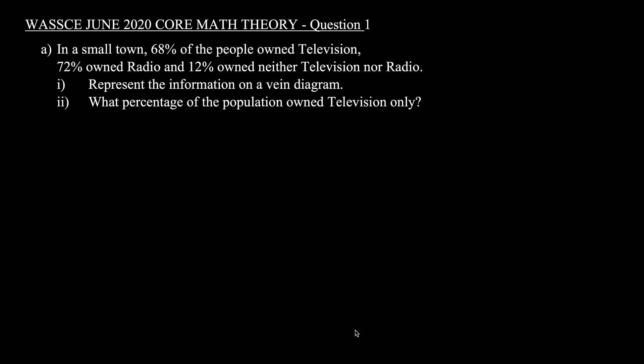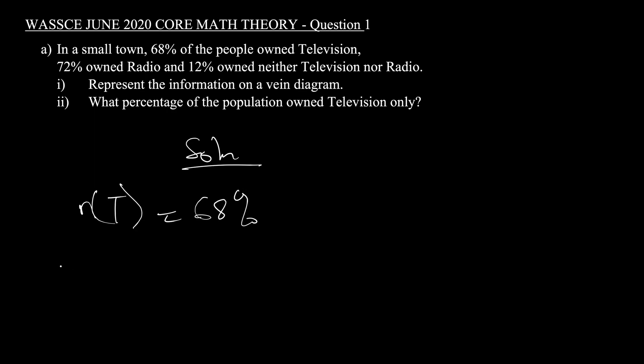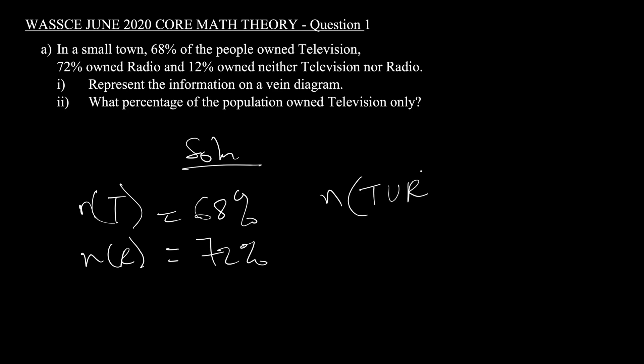In a small town, 68% of the people own television, 72% owned radio, and 12% owned neither television nor radio. We need to represent the information on a Venn diagram, and find what percentage of the population owned television only. The number of people who owned television is 68%, radio is 72%, and those who owned neither (T-Union R complement) is 12%. The total is 100%, so our universal set is 100%.